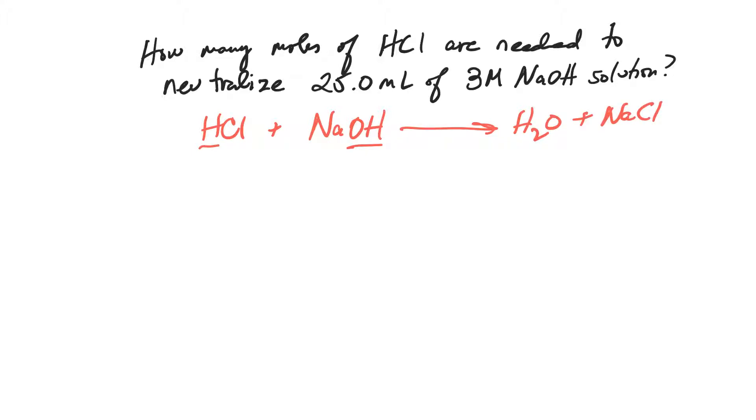Now I have to balance. I've got two hydrogens, two hydrogens, one sodium, one sodium, one chlorine, one chlorine. So it's a 1:1:1:1 relationship. How many moles of HCl are needed to neutralize 25 mL of 3 molar sodium hydroxide solution? Well, what's my moles? I want to know how many moles of sodium hydroxide.